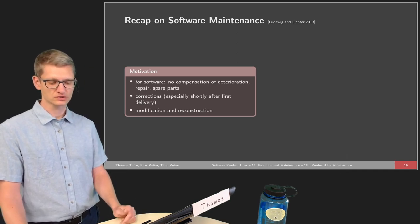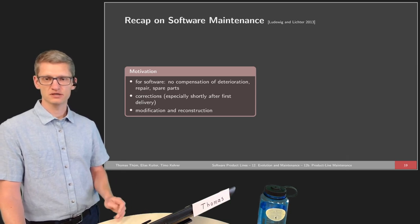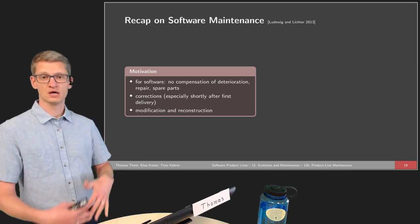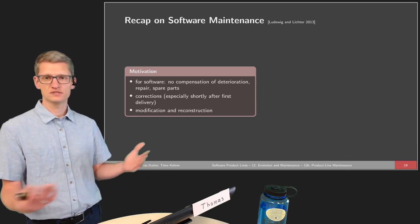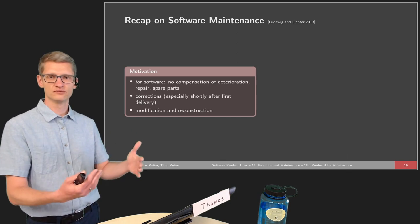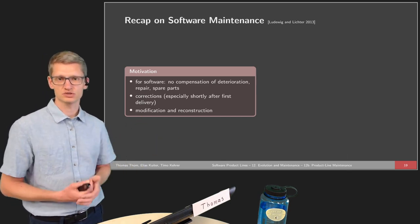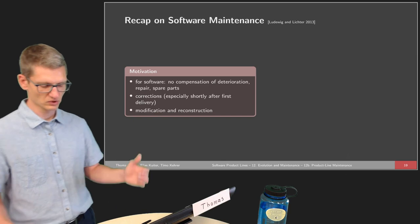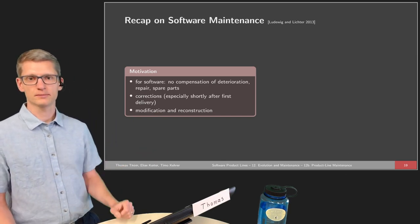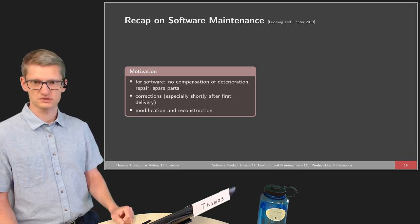We do have corrections, especially shortly after delivery, especially if we have some new products or larger changes. We see this in many areas — for instance, in operating systems: if there's a new version, many corrections happen afterwards. Or if a new car is produced, there will be a couple of iterations where further corrections are done.